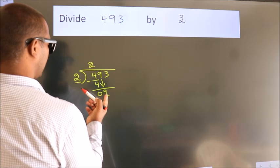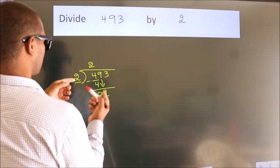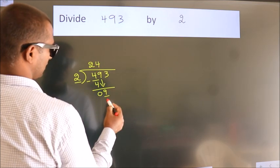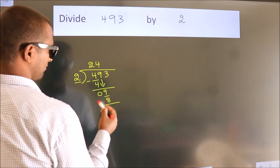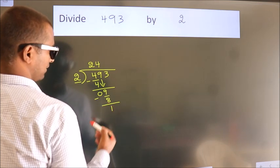A number close to 9 in 2 table is 2 fours, 8. Now we subtract. We get 1.